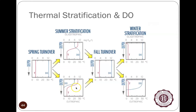In places like Lake Reba during summertime, nothing can live at the bottom because there's no oxygen — only anaerobic microorganisms survive there. In contrast, an oligotrophic lake stays cold and clear enough that sunlight penetrates deeper, maintaining dissolved oxygen levels at greater depths. During winter when ice forms, conditions change a bit, but we won't spend too much time on that.